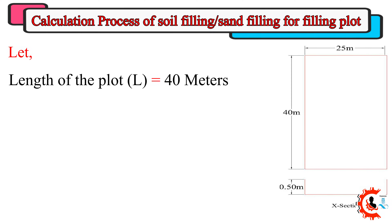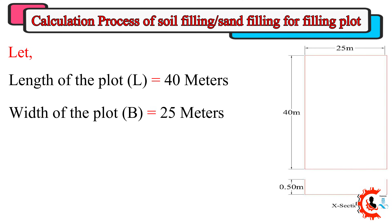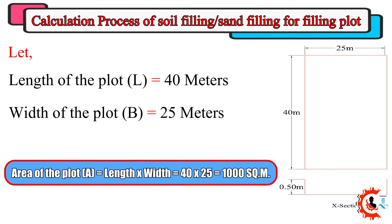Let the length of the plot L equal 40 meters and the width of the plot B equal 25 meters. The area of the plot A equals length times width, which is 40 times 25, equal to 1000 square meters.